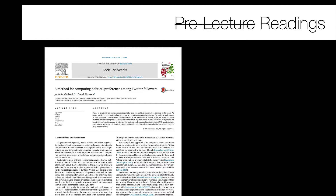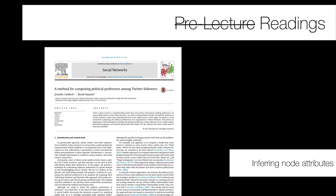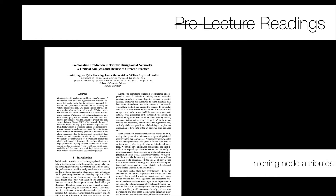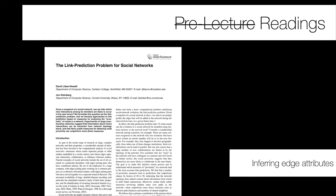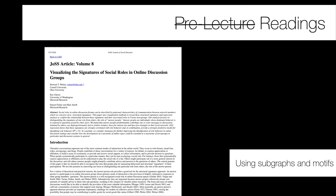There's another reading on geolocation prediction in Twitter using social networks, which covers different geolocation capabilities developed for Twitter — another instance of inferring node attributes. There's also a seminal paper on link prediction in social media from Liben-Nowell and Kleinberg about inferring edge attributes. Finally, the last reading is about using subgraphs and motifs to visualize signatures of social roles in online discussion groups. Together they give good insight into graph mining problems and techniques.